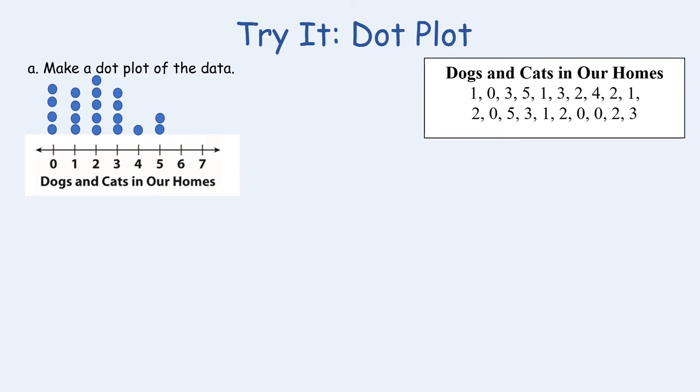And the same thing with number one it occurred four times, number two looks like it occurred five, three appeared four times, four cats and dogs appeared once, and five cats and dogs appeared twice. So the data in the dot plot matches the data in our box at the top of the screen.